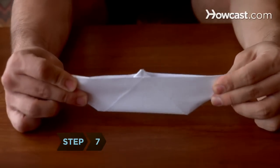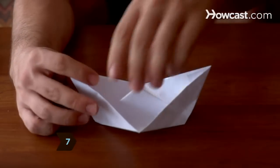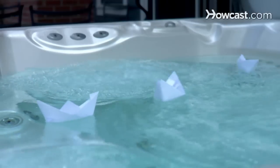Step 7. Open the flaps, revealing a triangle sail in the middle of your new paper boat. Now you are ready to sail away. Bon voyage!